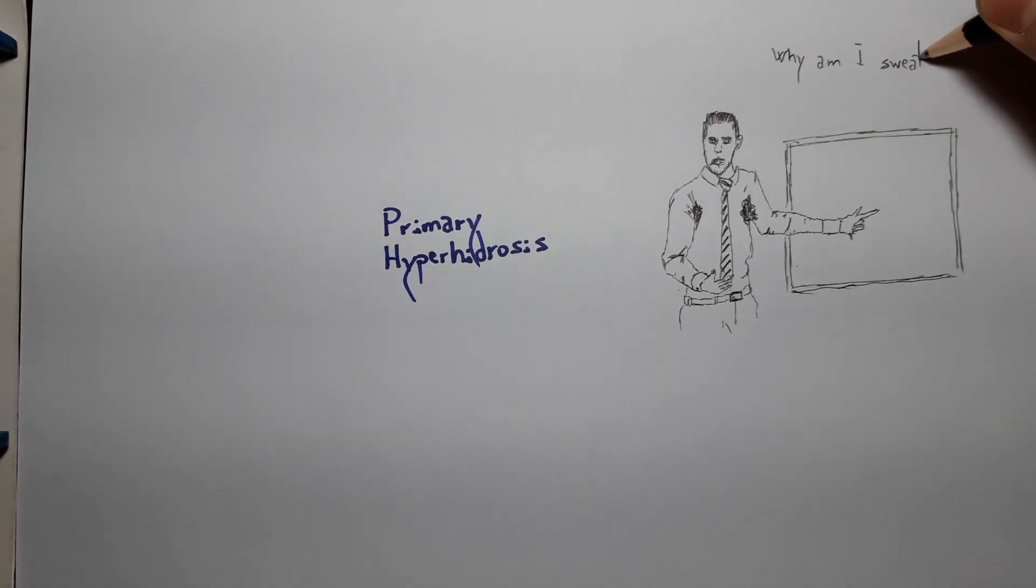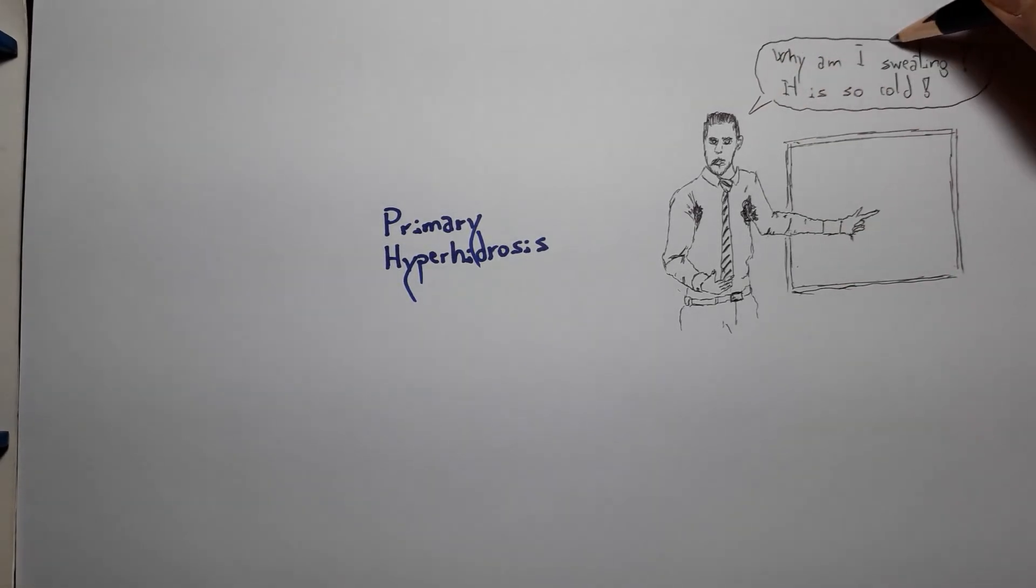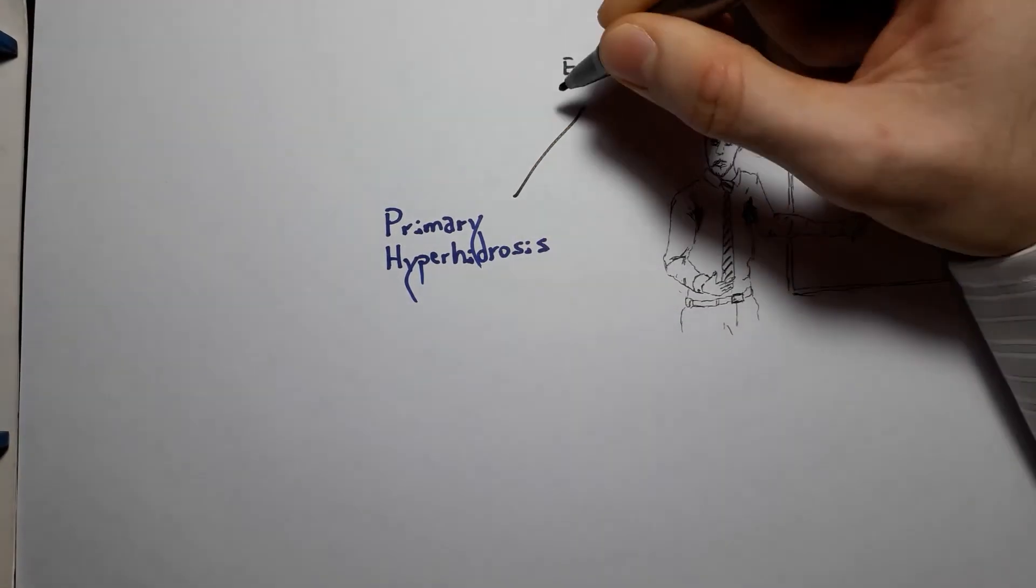Hyperhidrosis can be primary or secondary. If it's secondary, it can be secondary to pregnancy, menopause, diabetes, obesity, fever, autonomic degenerative disorders, cerebral infarction, spinal cord injury, harlequin syndrome, metabolic disorders.